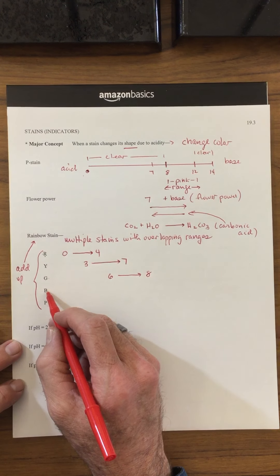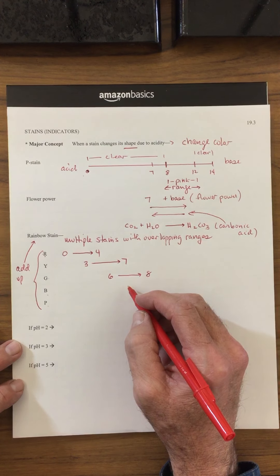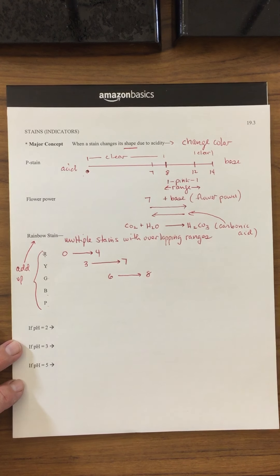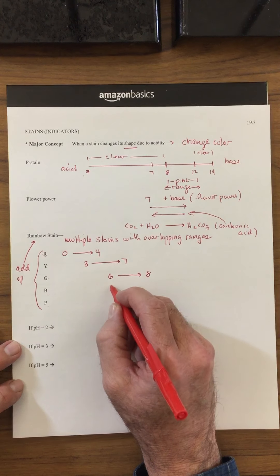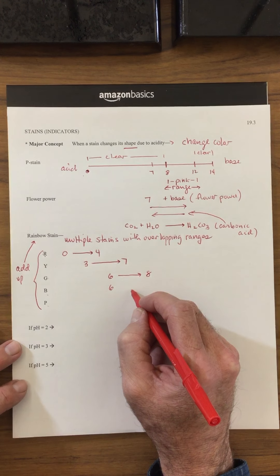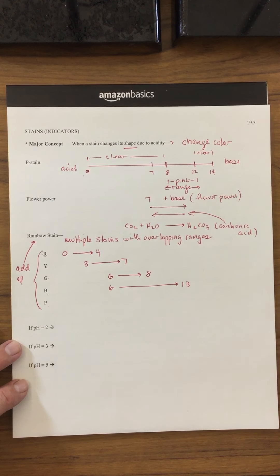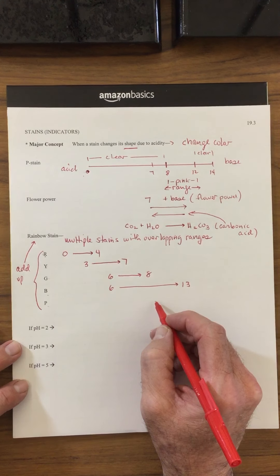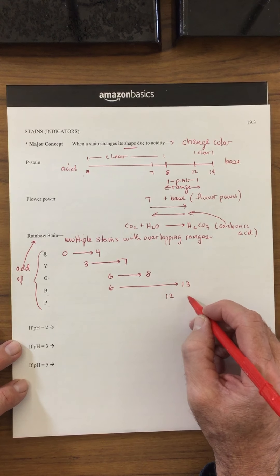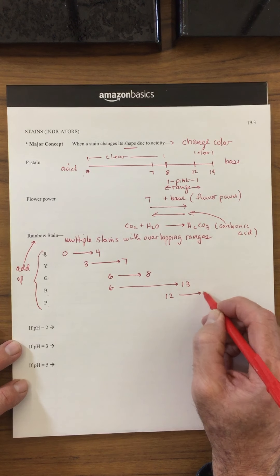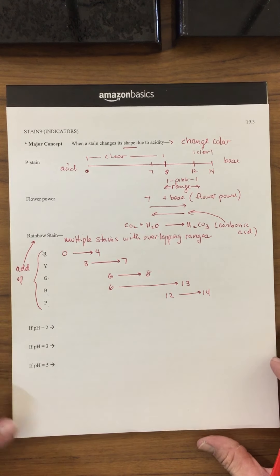Let's say the range for the blue stain is going to be between 6 and 13. Let's say the purple stain functions between 12 and 14.